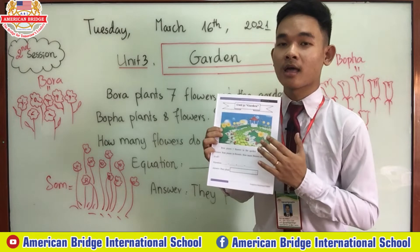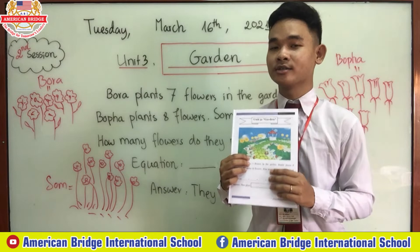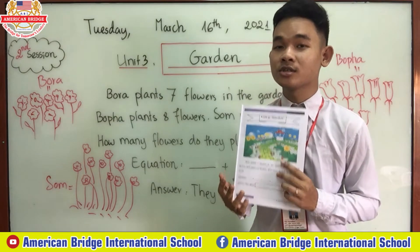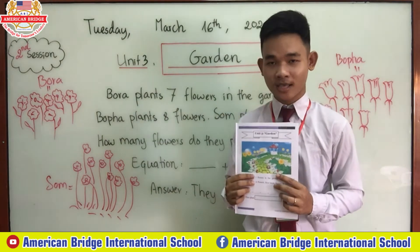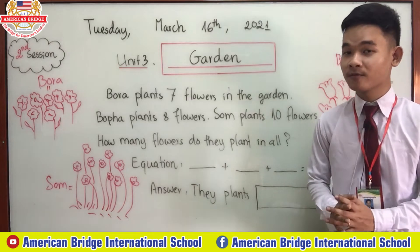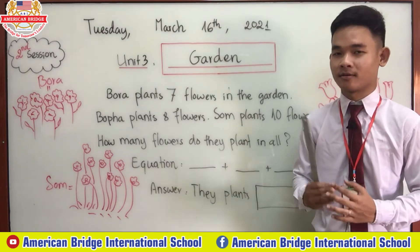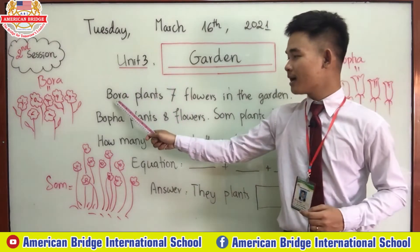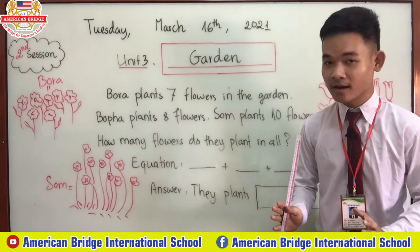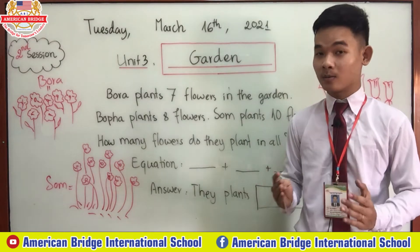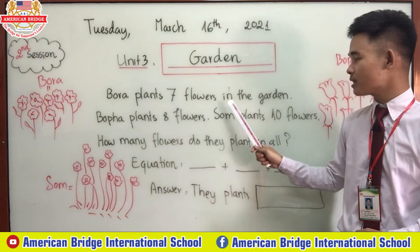This is the problem. I'll write it on the whiteboard and we will try to understand and then solve the problem all together. Are you ready? So now let's do it all together. I will read for you first and then we try to understand and do the addition all together. Bora plants seven flowers in the garden.